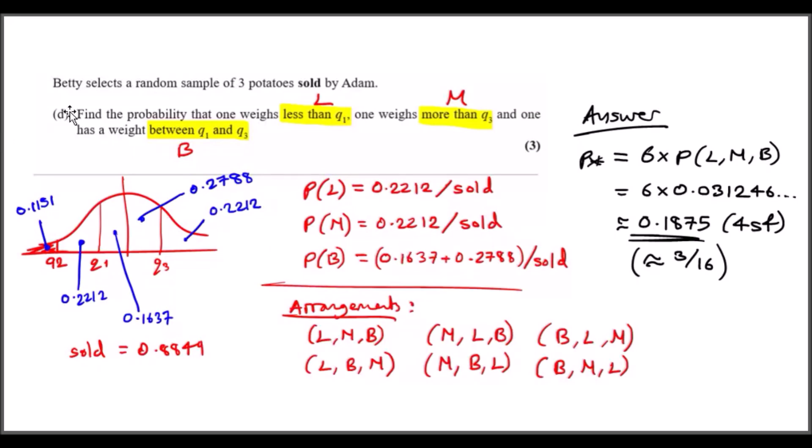Now to get this correct, because it's a random sample, this means he could have picked these three potatoes in any order. My tip is to always try and figure out the arrangements. So I did less than, more than, between: LBM, and so on, putting them in a nice simple way to look at it. Then you realize that all the probabilities, if you multiplied all of these three, they're all going to give you the same results. So six times the same result. I got it here, and you just put this in the calculator, and done, you literally get your result.